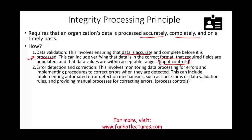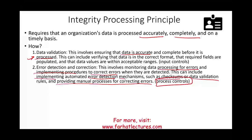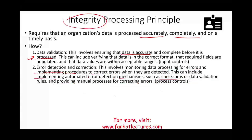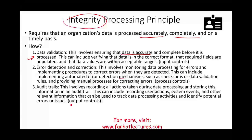Error detection and correction involves monitoring data processing for errors and implementing procedures to correct those errors when detected. This includes implementing automated error detection mechanisms such as checksums and data validation rules, as well as providing manual processes for correcting errors. This is called process controls — once data is input into the system, you want to make sure it is processed properly. We have dedicated sessions on input controls, processing controls, and output controls.